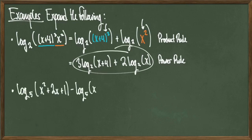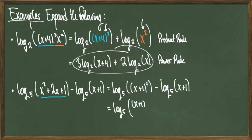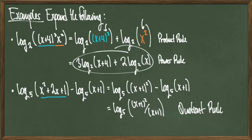In this next problem, we'll actually compress log base 5 of x squared plus 2x plus 1 minus log base 5 of x plus 1. The first thing I'll do with the left quantity is simplify the inside by factoring the quadratic. So I get log base 5 of x plus 1 squared minus log base 5 of x plus 1. Then I'll use the quotient rule to divide the two out, and after I simplify the inside, I simply get a final answer of log base 5 of x plus 1, and we're done.